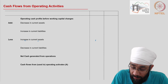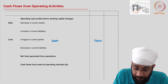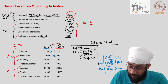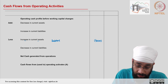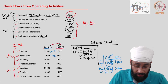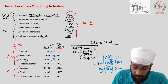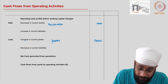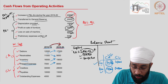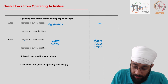Current assets increasing by 5,000 is an outflow, so debtors 5,000 is deducted. Next, receivables are going down — current assets decreasing is an inflow — so 2,000 inflow due to receivables. Stock/inventory is going up by 3,000 — current asset increase is an outflow — so stock 3,000 is deducted. Prepaid expenses are also going up — current asset going up is an outflow — so prepaid expenses 1,000 is deducted.